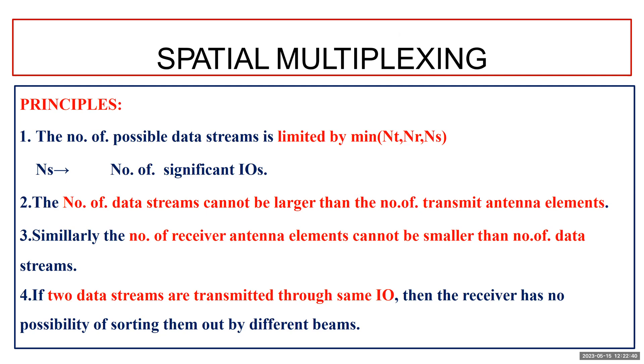If two data streams are transmitted through the same IO, then the receiver has no possibility of sorting them out. It's very much important to focus on spatial multiplexing technique and the encoding technique as well as the decoding technique.